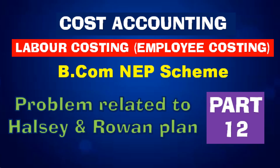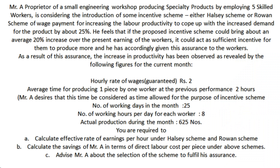In today's video, we'll be solving a problem related to Rowan and Halsey plan. The question is on the screen — kindly take a screenshot. Mr. A, proprietor of a small engineering workshop, produces specialty products by employing five skilled workers. That proprietor is planning to introduce some incentive plan, either through Halsey plan or Rowan plan.